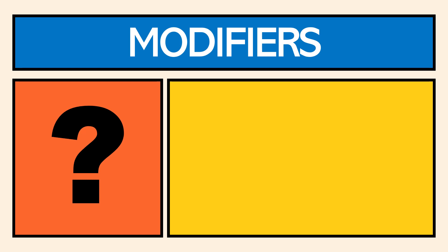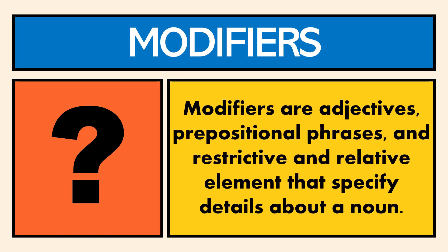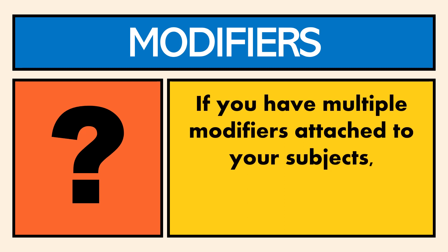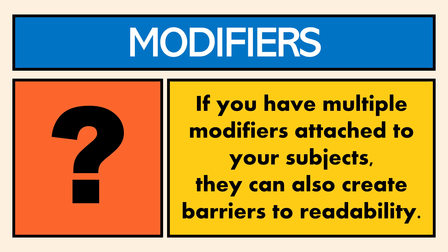In addition to having a lot of subjects, you could also have a lot of modifiers attached to a subject. Modifiers are simply adjectives, prepositional phrases, and restrictive or relative elements that specify details about a noun. If you have multiple modifiers attached to your subject or subjects, that can also create barriers to readability because there's a lot of distance between the subject and the action, and a lot of information to hold on to.